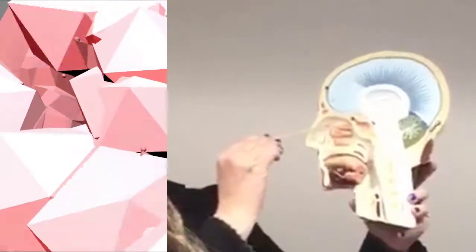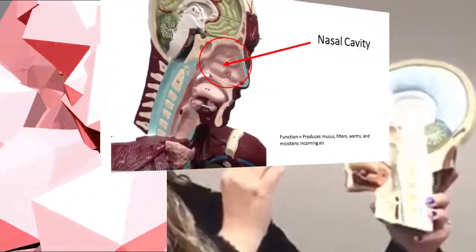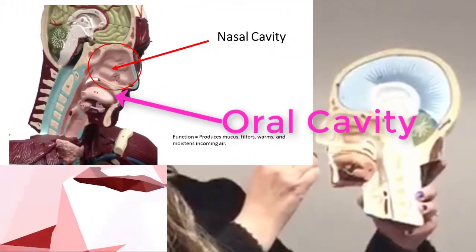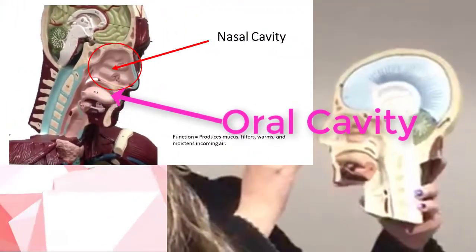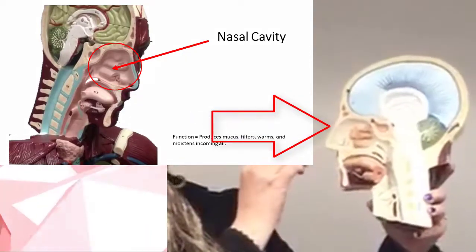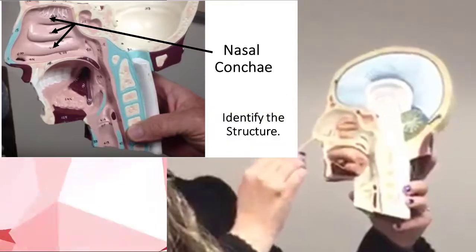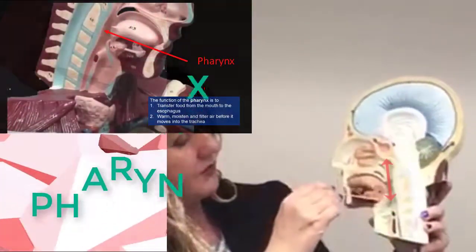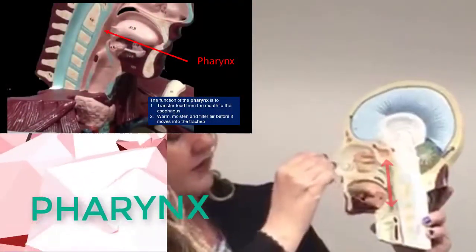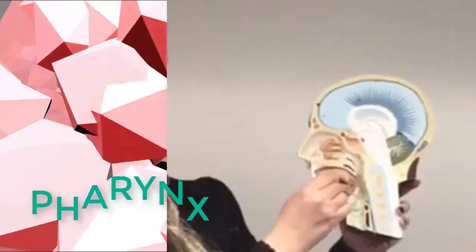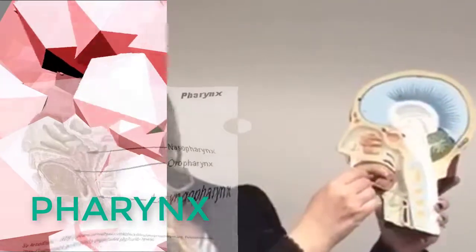This entire region here is the nasal cavity. This is the oral cavity here. These three structures here make up the nasal concha. As you inhale, air is going to go this way. This entire area from here to about here is the pharynx.